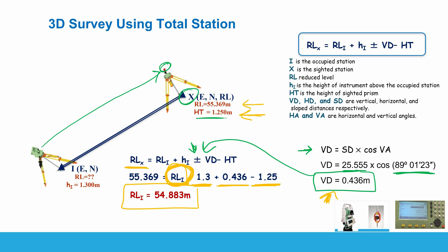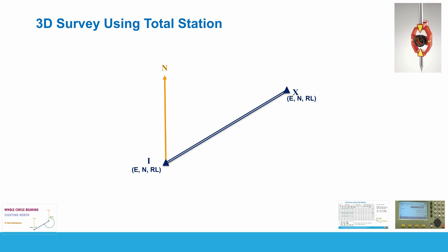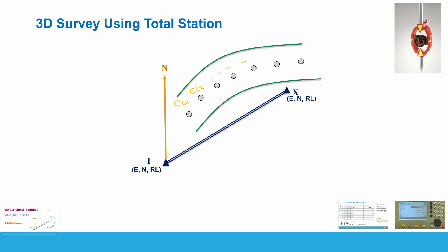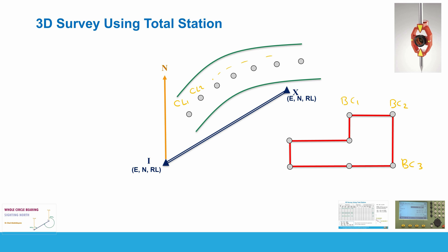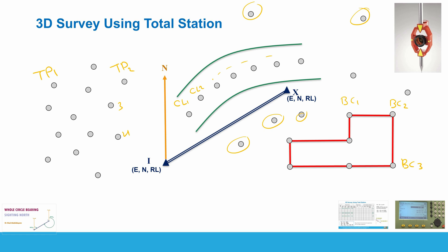Once you've calculated the reduced level of station I, you can survey your area and calculate the easting, northing, and reduced level of all cited points. For example, your aim might be to calculate the 3D coordinates of the center line of a road — center line 1, center line 2, center line 3, etc. — plus building corners and terrain points (TP1, TP2, TP3, etc.) representing the topography of the area.